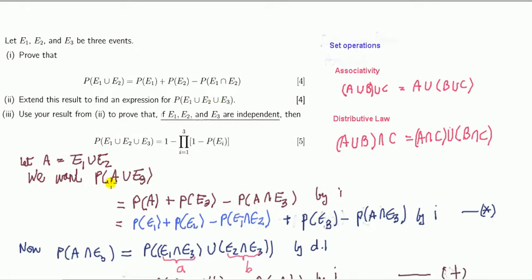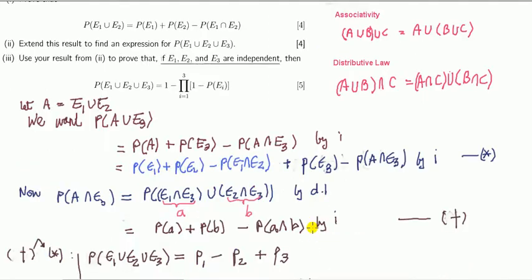Then what we want to find is this probability of A union E3 is the same as this. But we can also use the result from part one. Right hand side, so that's all I've done here. Written that right hand side. The bit in blue is I've applied result one again to probability of A.